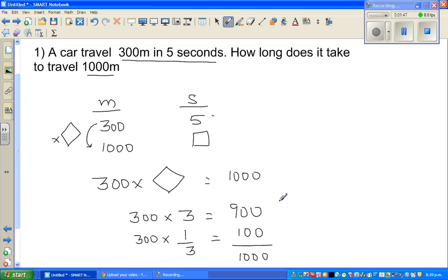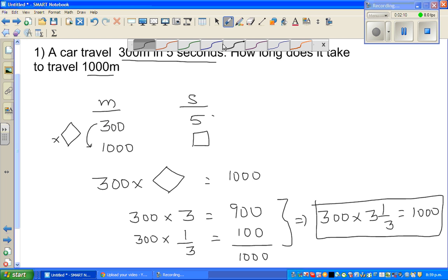This means you can say 300 times 3 and one third gives you 1000. We'll check it on a calculator later, but we're trying to do without the calculator. So if this is a ratio or proportion, 300 times 3 and one third gives you 1000. To get this answer, you should multiply 5 with the same number which is 3 and one third.